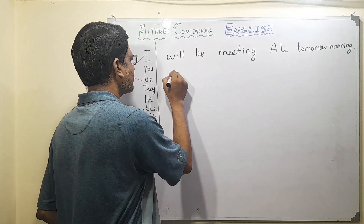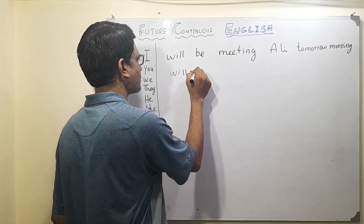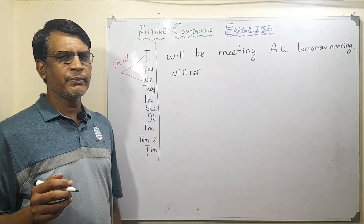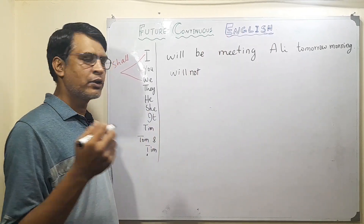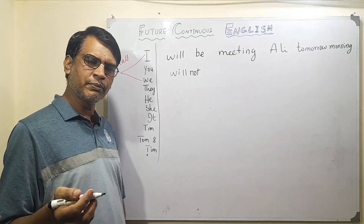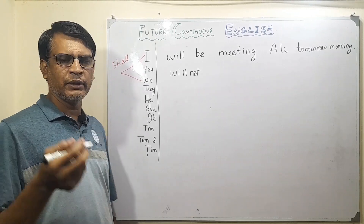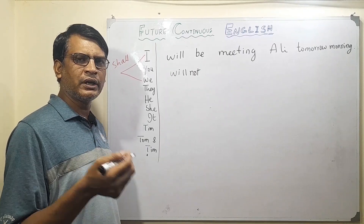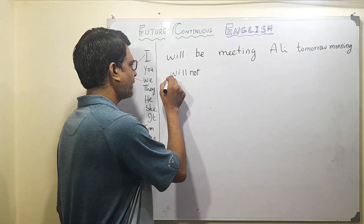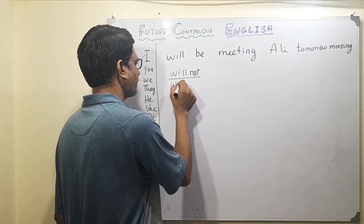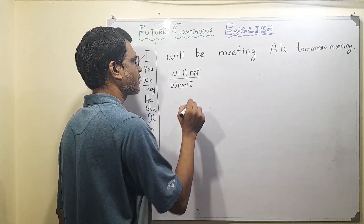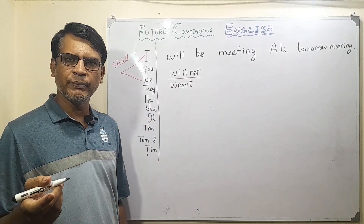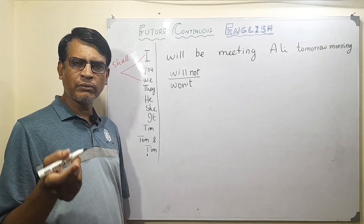The negative is 'will not be.' So: I will not be meeting Ali tomorrow morning, we will not be meeting Ali tomorrow morning, they will not, he will not, she will not, it will not, Tim and Tom will not. The contracted negative form is 'won't be' — I won't be meeting, they won't be meeting, she won't be meeting, he won't be meeting.